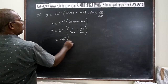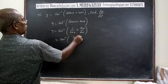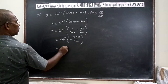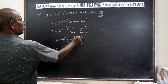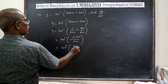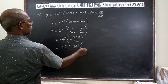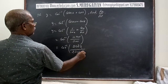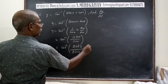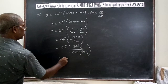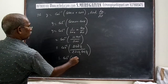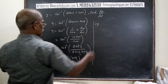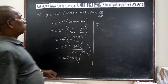We have already discussed this type of question. Using the identities 1 + cos x = 2cos²(x/2) and sin x = 2sin(x/2)cos(x/2), the expression simplifies to cot⁻¹(cot(x/2)), giving y = x/2.